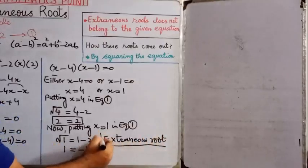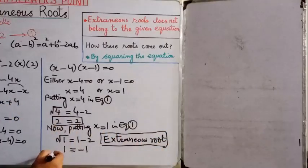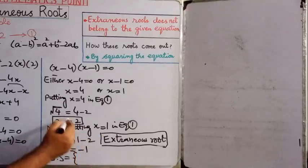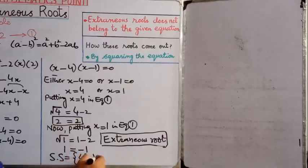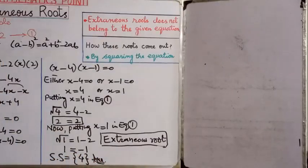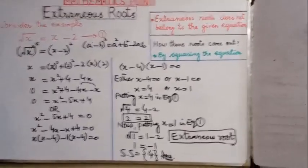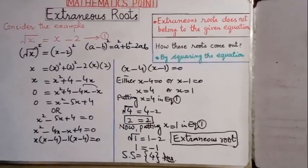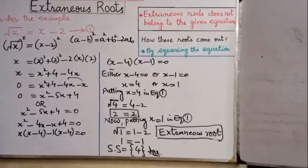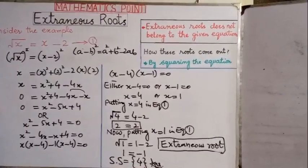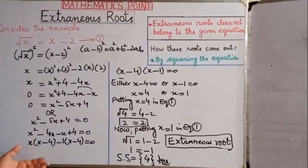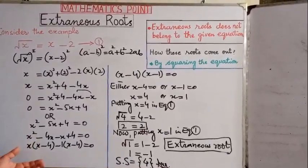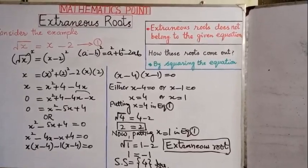x equals 1 is an extraneous root, so the solution set of this equation contains only x equals 4, which satisfies the given equation. Today we discussed extraneous roots when solving radical equations, and learned how to solve and verify such equations. Thank you so much, I hope you liked this video — please subscribe to my channel for more important videos. Take care, Allah Hafiz.